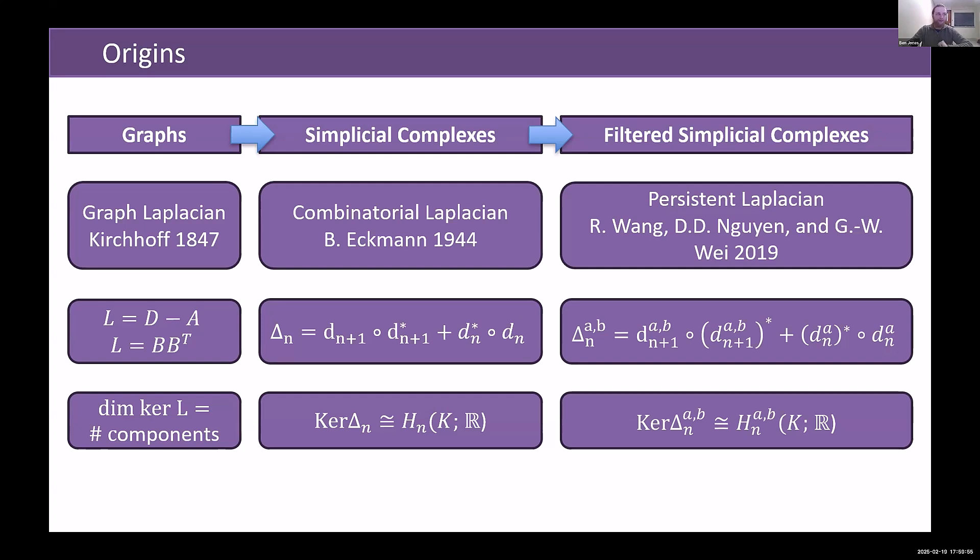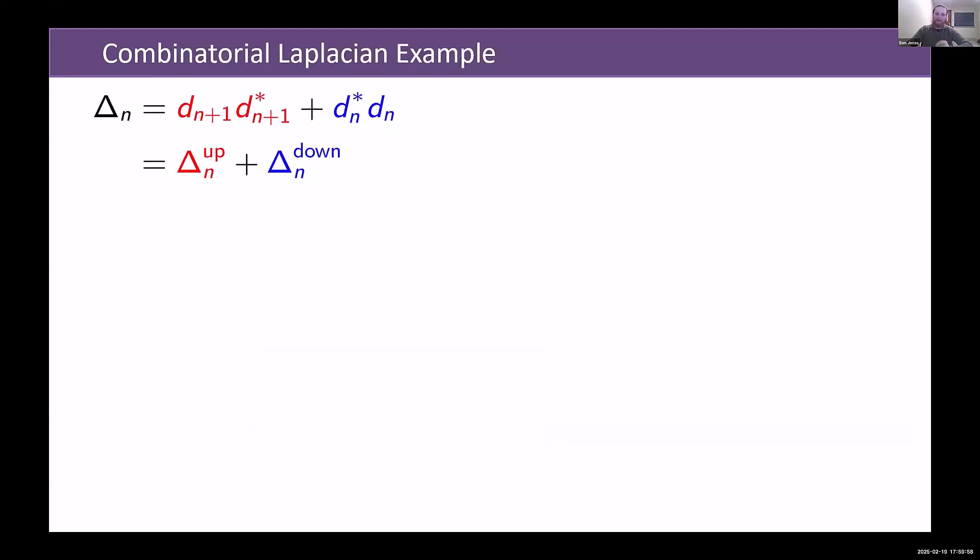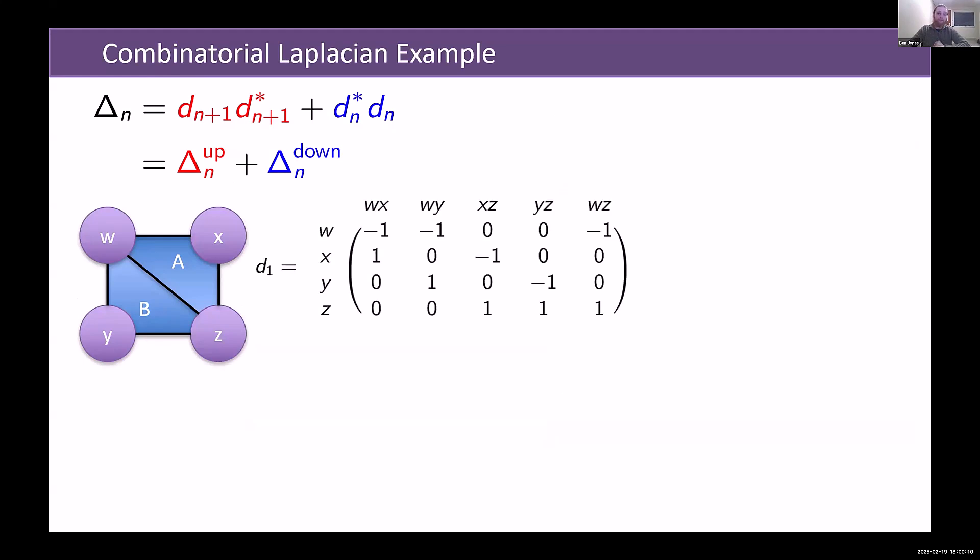So it's a really useful generalization, but now let's get down to a real example with it. Let's compute a combinatorial Laplacian, and then we'll do a persistent one. Let's suppose we have this simplicial complex: four vertices, five edges, and two two-simplices. We can compute its boundary matrix from dimension one, so going from edges to vertices, and the boundary matrix going from the two-simplices to the edges.